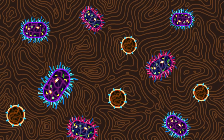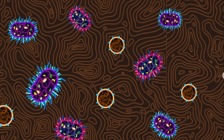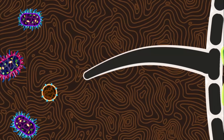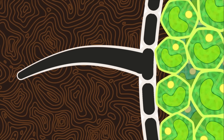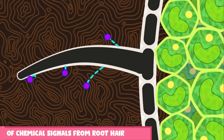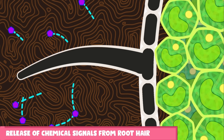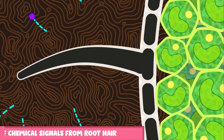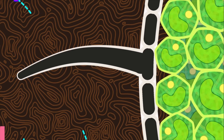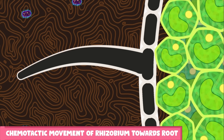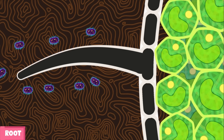The process of root nodule formation is initiated when the leguminous plant releases certain chemicals through their roots. These released chemicals may include amino acids, dicarboxylic acids, and very low concentrations of excreted components called flavonoids. The rhizobium present in the surrounding soil are attracted toward these chemicals and move by chemotactic movement.